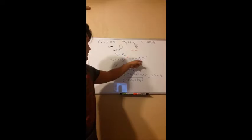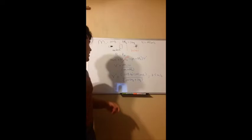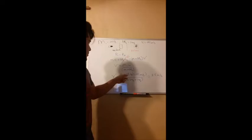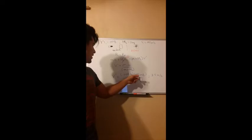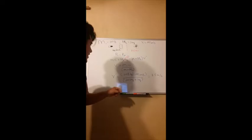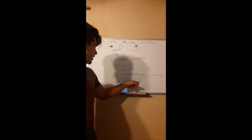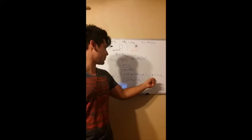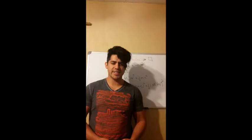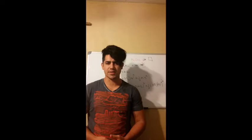V prime is the velocity of the entire combined object after the collision. We are asked to find V prime, and when we solve for it, V prime equals M1 times V1 divided by M1 plus M2. I used 0.008 kilograms for the mass of the bullet, the bullet was traveling at 441 meters per second, and the mass of the block is 0.1 kilograms. V prime — the velocity after the collision — was 3.5 meters per second.